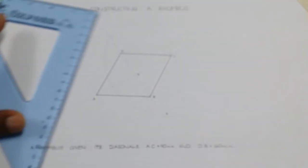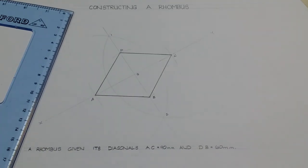And with that, we come to an end of our construction of a rhombus given its diagonal AC 90 millimeters and DB 60 millimeters. Thank you for viewing.